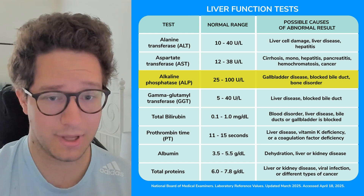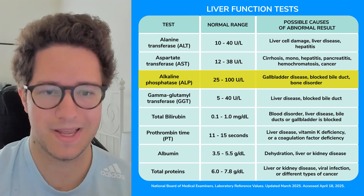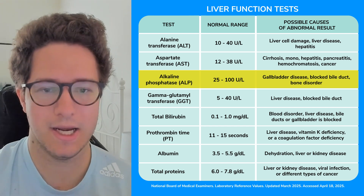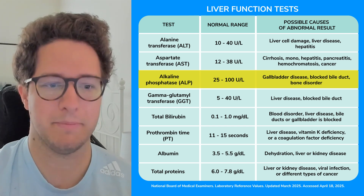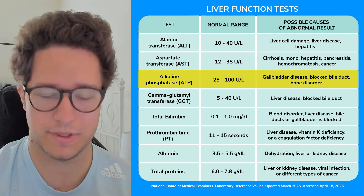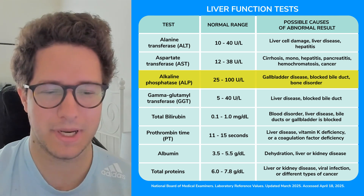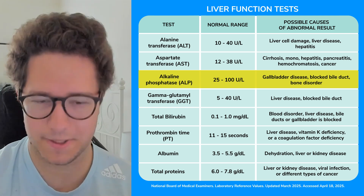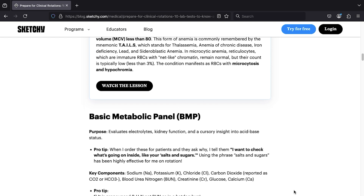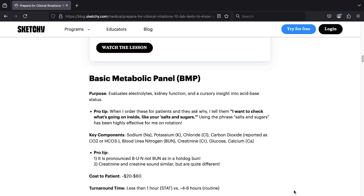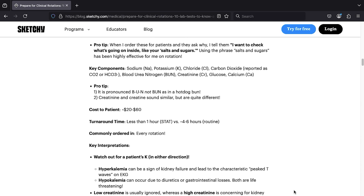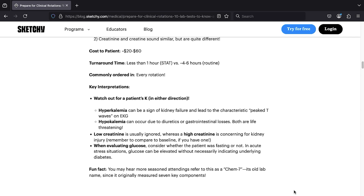For alkaline phosphatase, or ALP, if that's high, I start thinking of gallbladder disease, bile duct obstruction, or bone disorders — a little general because ALP is released in different parts of the body too. That's your breakdown of the comprehensive metabolic panel. Make sure to check out the description below for the blog on the basic metabolic panel so you know how to interpret all the salts and sugars that weren't mentioned today.